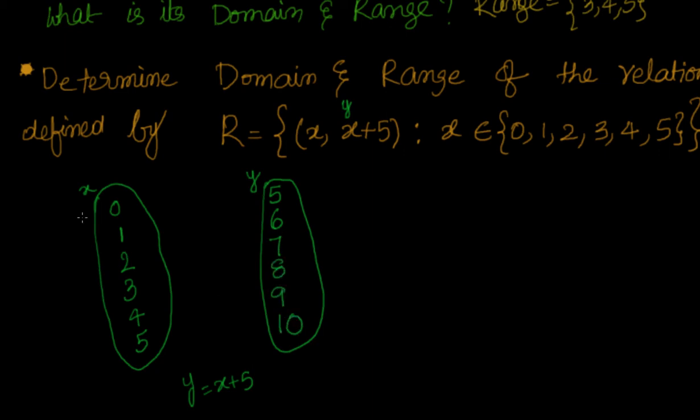Now how the relation goes: (x, x+5). 0 to 5, similarly 1 to 6, similarly 2 to 7, 3 to 8, 4 to 9, and 5 to 10.